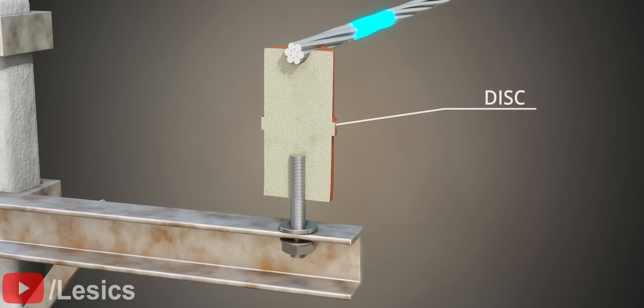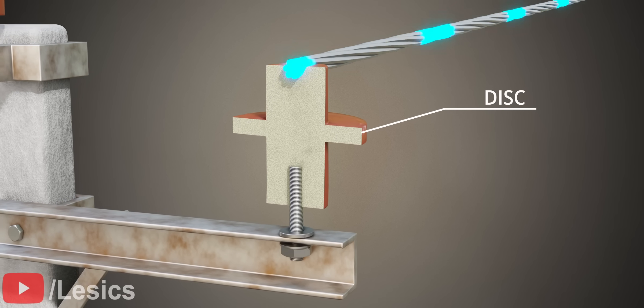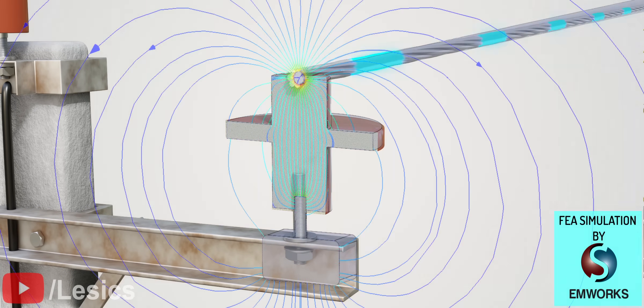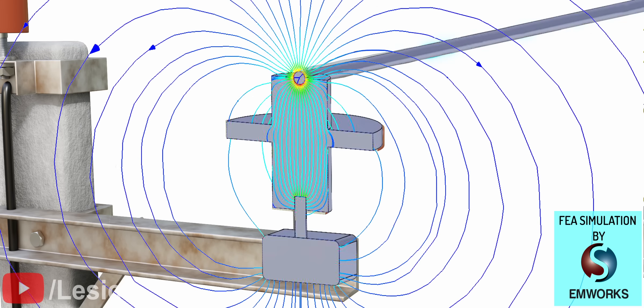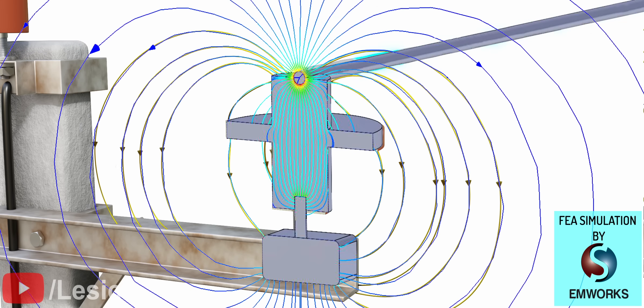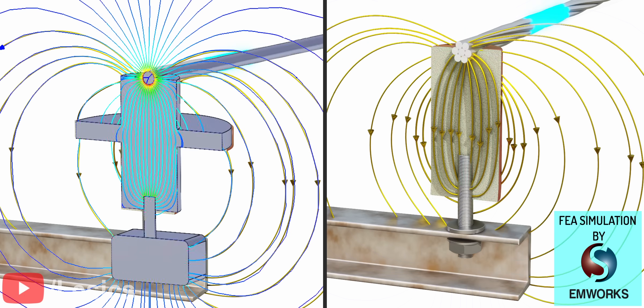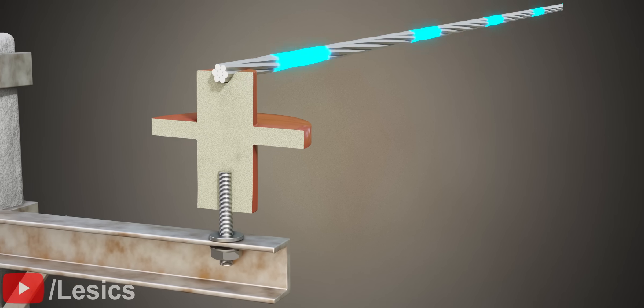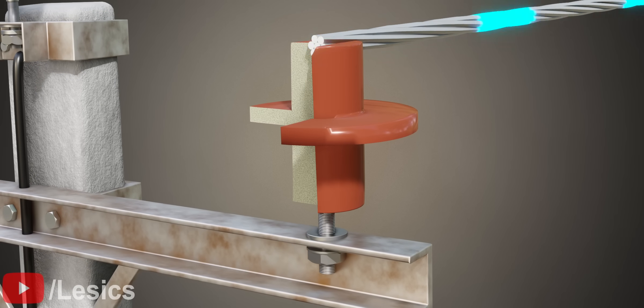We can solve this issue with the addition of a simple disk. This FEA result from EMWorks clearly shows what happens to the electric field lines when a disk is present. You can see that the addition of the disk has reduced the number of electric field lines in the air significantly even though the electric field intensity is the same.